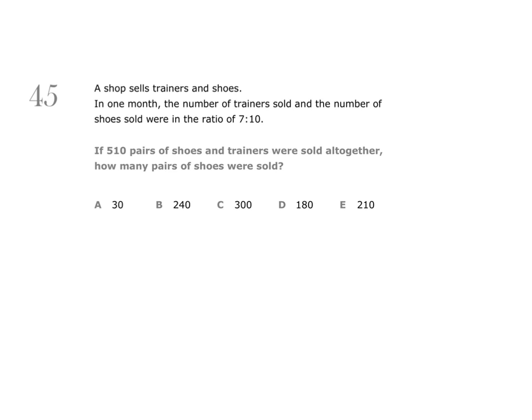We know then that the number of trainers sold and the number of shoes sold were 7 to 10. This ratio indicates that for every 7 pairs of trainers which were sold, 10 pairs of shoes were sold. We know in total 510 pairs of shoes and trainers were sold.